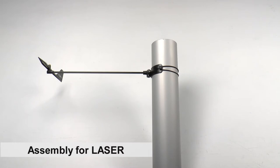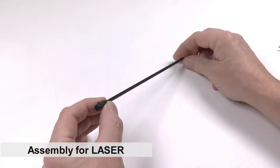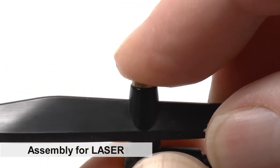Let's start with a typical installation for laser. The vane is assembled to the shaft using friction mount. Push on the screw, not on the vane.